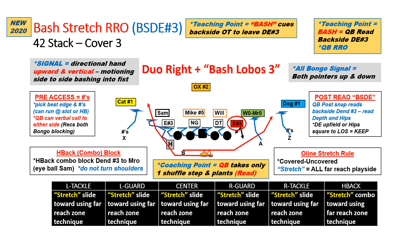Our next foundation concept that you should use at all levels is a bash stretch or bash concept. Bash means back away. So if we're running stretch zone to the left, the back will go to the right, and we're going to read that backside defensive end. If he sits, then the quarterback gets. If he comes down the line chasing the tackle, then the back will get the ball running out the back door. Quarterback will take his same slide step and read the defensive end. If he sits, he's going to plant and becomes a ball carrier to the left. Real simple, sound way to make your quarterback the primary ball carrier.